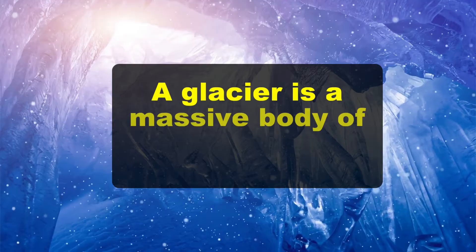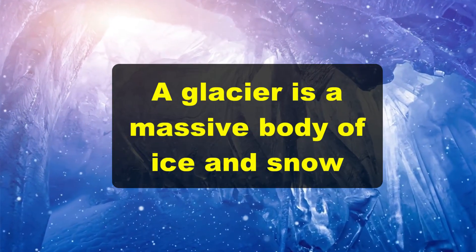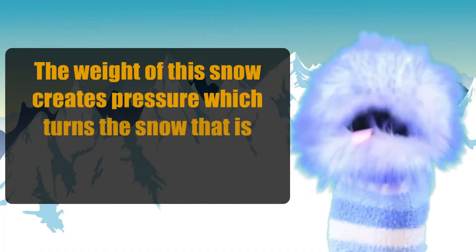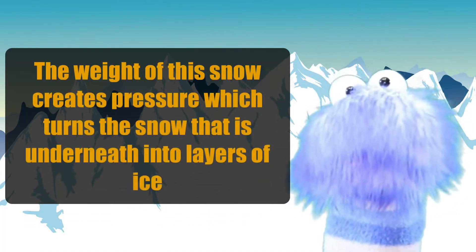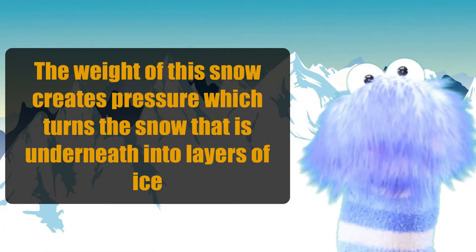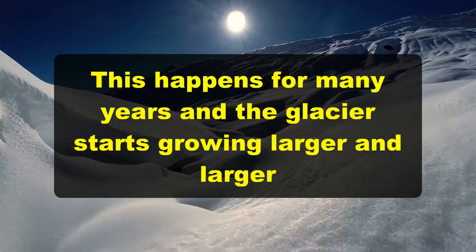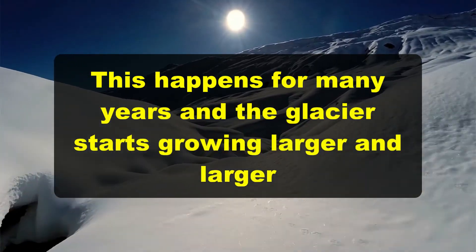A glacier is a massive body of ice and snow. Glaciers form over many years as snow and ice build up quicker than it is removed. Every single winter, more snow is added to that glacier. The weight of the snow creates pressure, which turns the snow underneath into layers of ice, and this happens for many years as the glacier starts growing larger and larger.